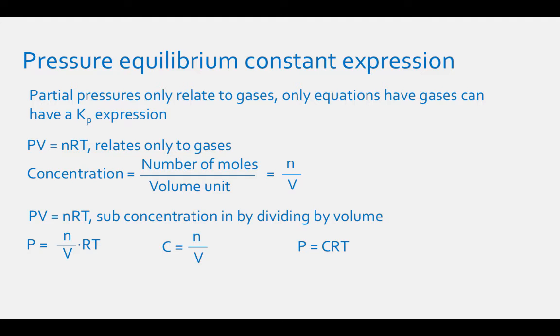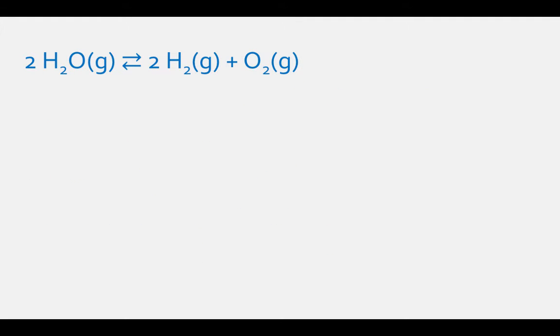Let's relate this to an example: 2H2O gas in equilibrium with 2H2 gas plus O2 gas. First, write the Kp expression. Equilibrium constant expressions have products over reactants, so Kp equals the partial pressure of H2 squared times the partial pressure of O2, divided by the partial pressure of H2O squared.